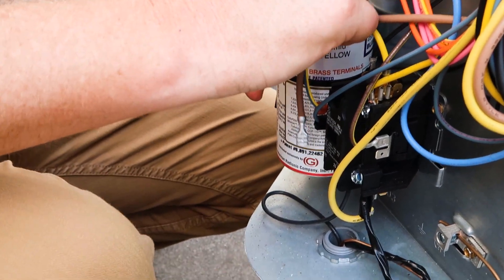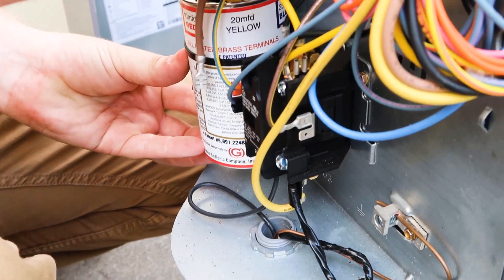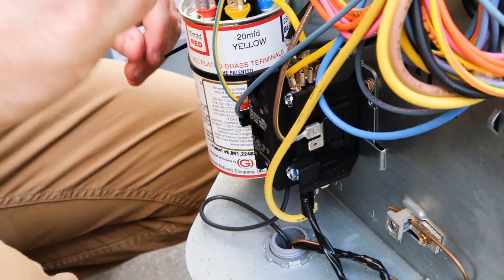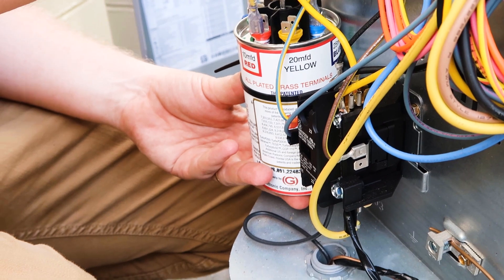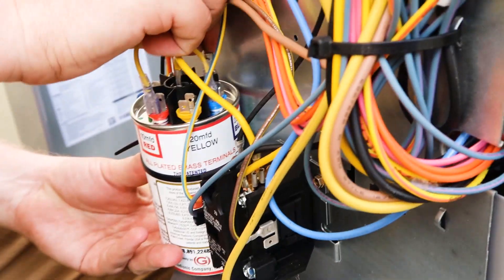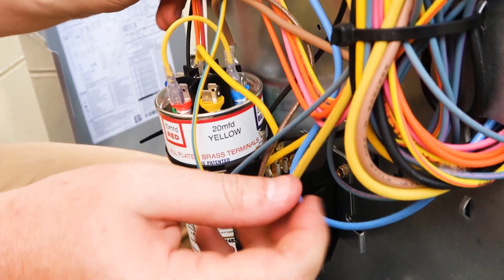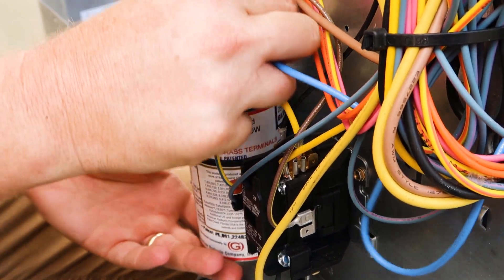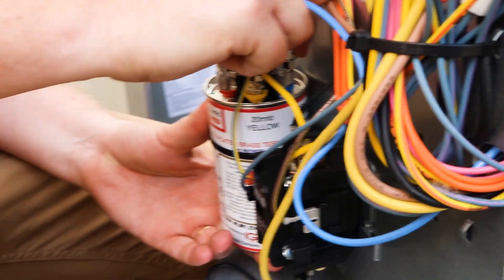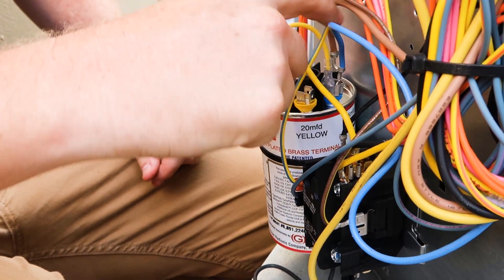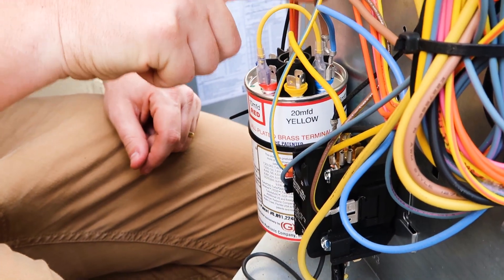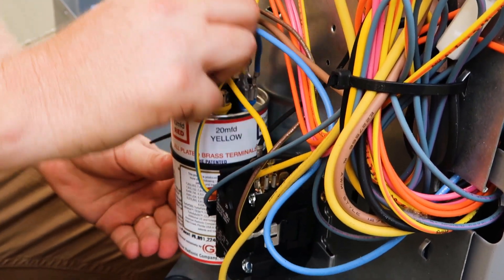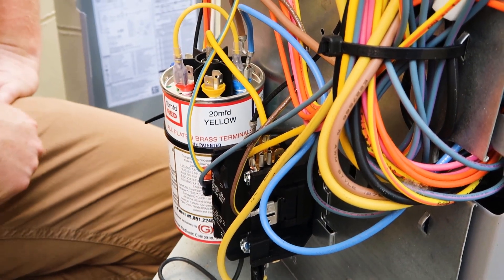We have our common, which goes to the center. Again, you've got to make sure everything is nice and snug. We have our fan, which goes to our five microfarad right here. Then we have our compressor right here, which goes to the larger of the two values, which is our 25 over here. So now we've got a 35, which is between these two. Our fan is a five, and then we got our common going back. Make sure everything's nice and taut. Yep, we're in good shape. That's it.